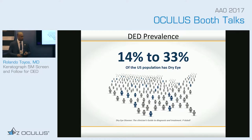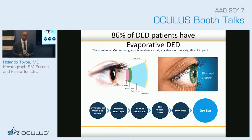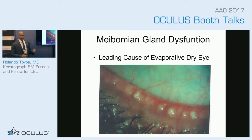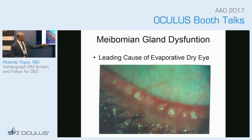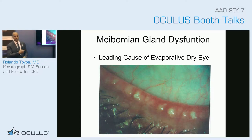Dry eye is big — I don't think I have to tell people that anymore. A high percentage of our patients are coming in with dry eye, and the older they get, the higher the percentage gets. The type of dry eye we mostly see is meibomian gland dysfunction — evaporative dry eye. These patients may have inspissated glands, telangiectasia, thickening of the lid margin, bacterial growth, injection of the eye — and all these things can actually be measured with the Oculus Keratograph.